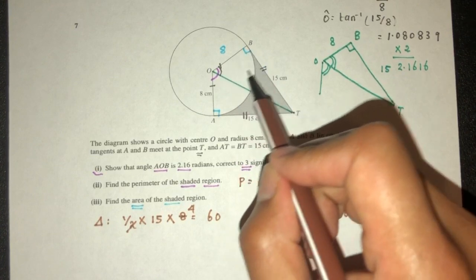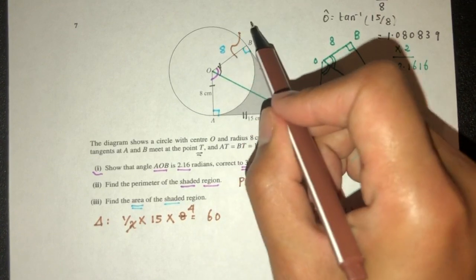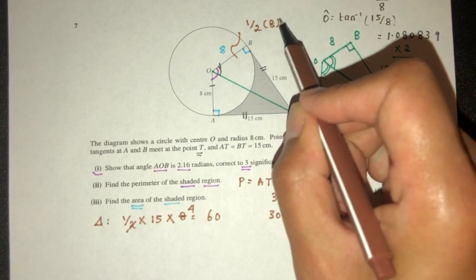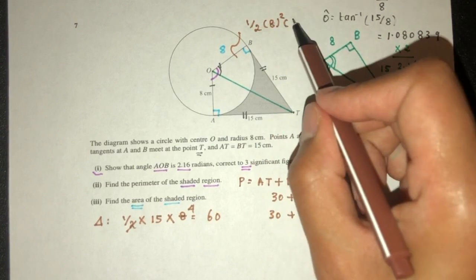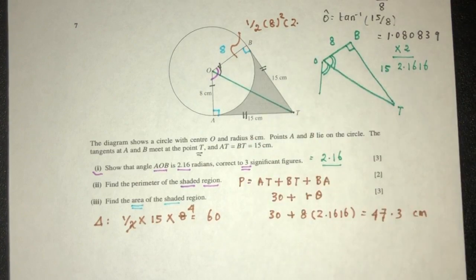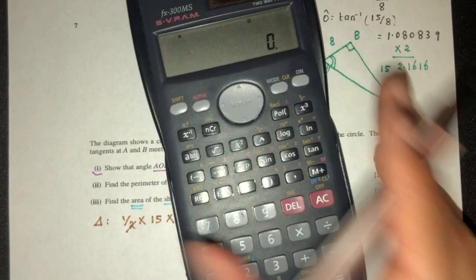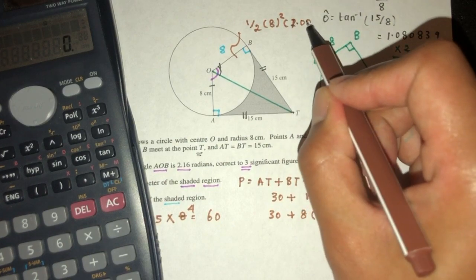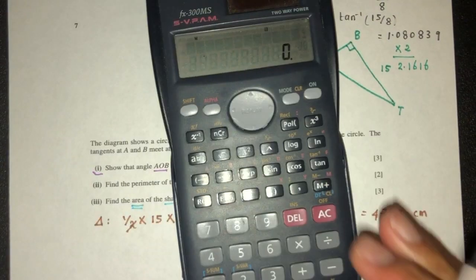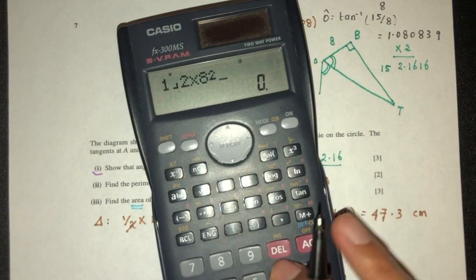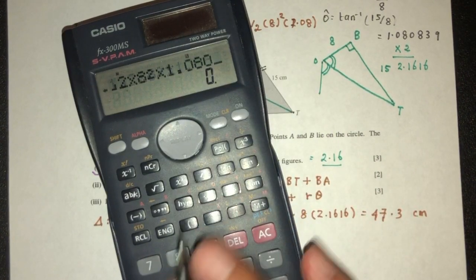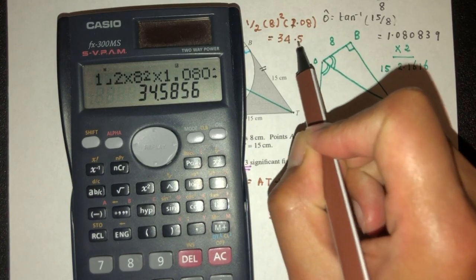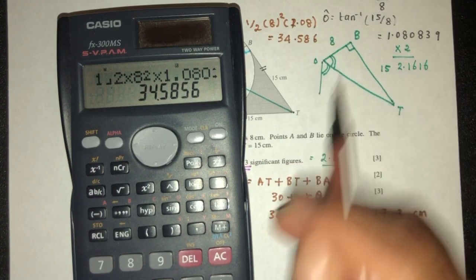Now we do not want this part. So this is the area of sector. That will be half R squared, which will be 8 squared, and the angle will be... this is only half the angle. My apologies. That should be 1.0808. So let's do that. Half times 8 squared times 1.0808, that should be 34.586.